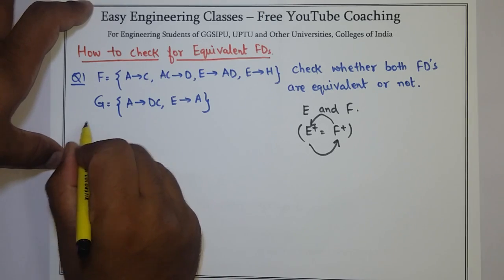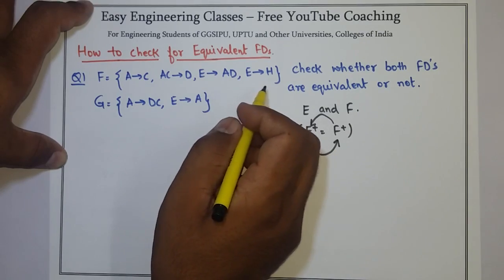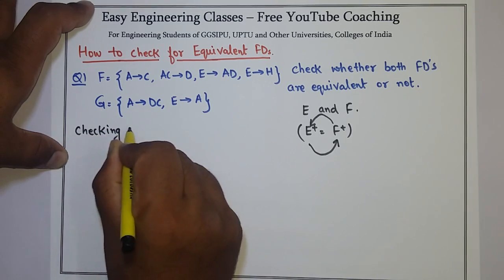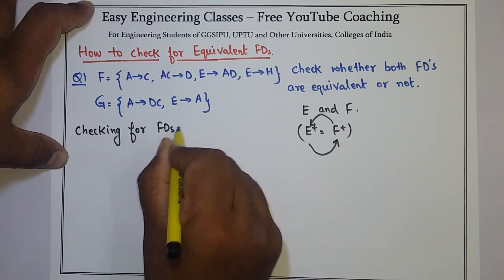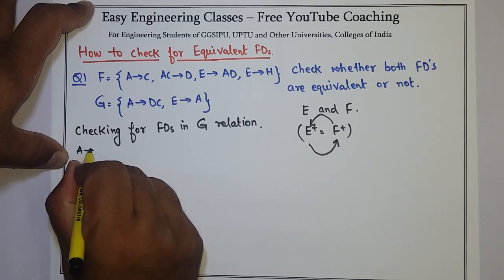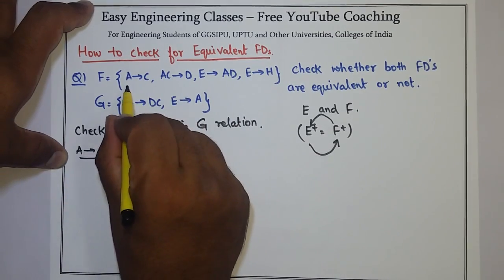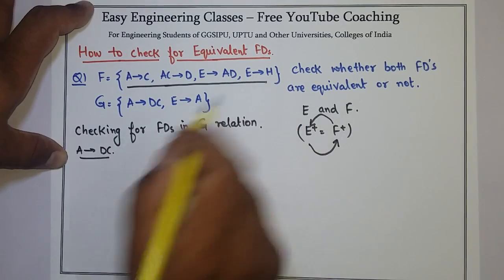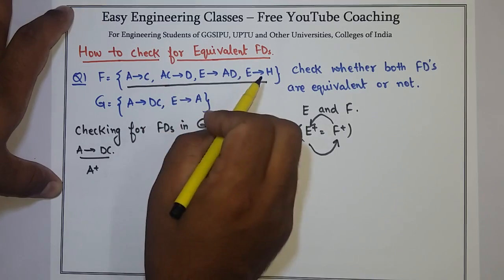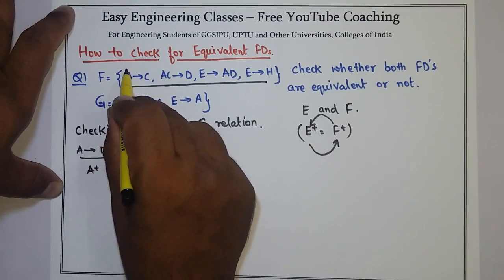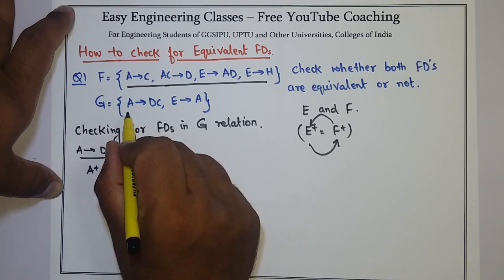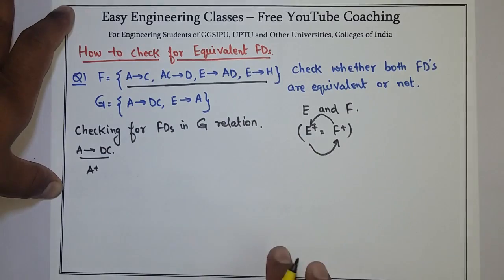We will check all FDs in G relation. Suppose I have to check whether A determines DC can be inferred from a given set of FDs in relation F. For this I have to find A plus with respect to given FDs in F. So A plus, you can infer this FD from the FDs given in F.